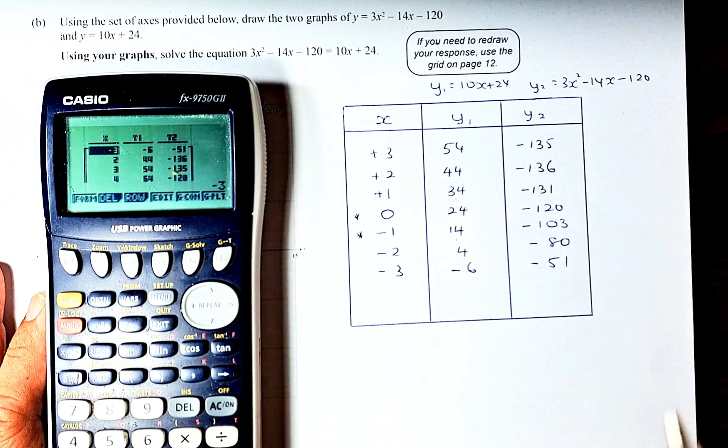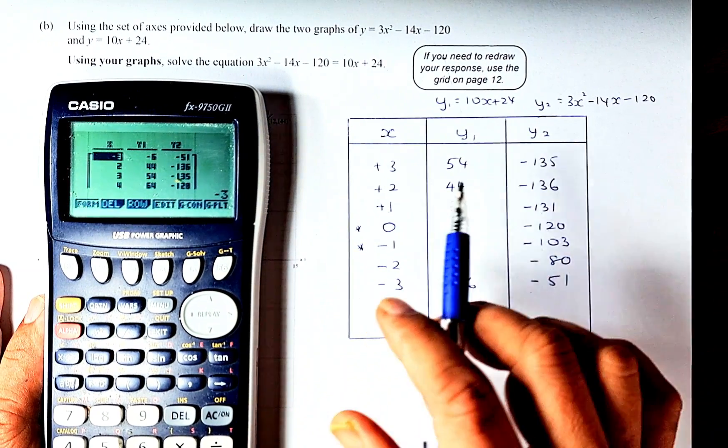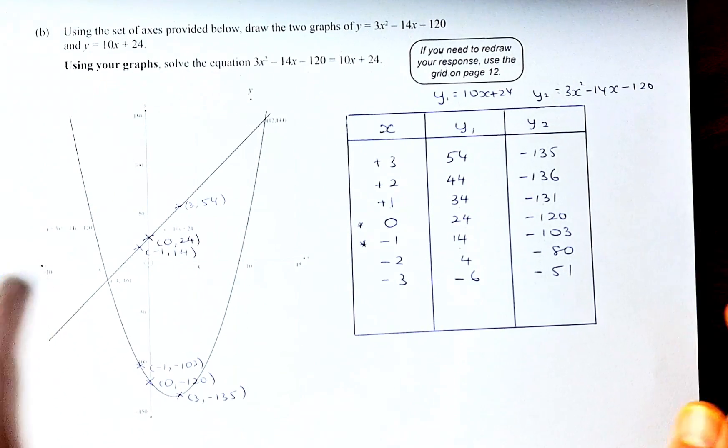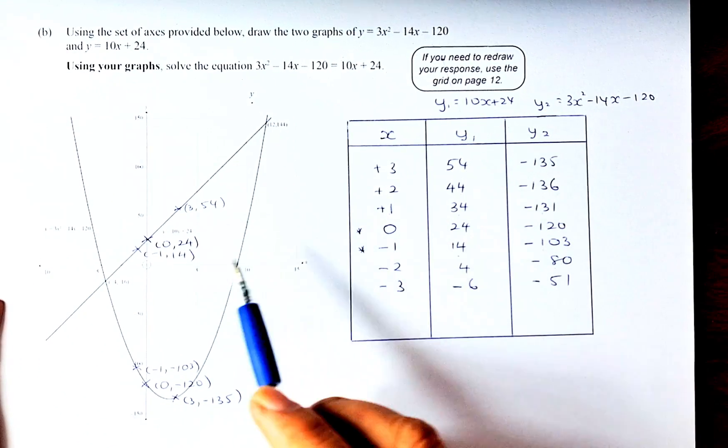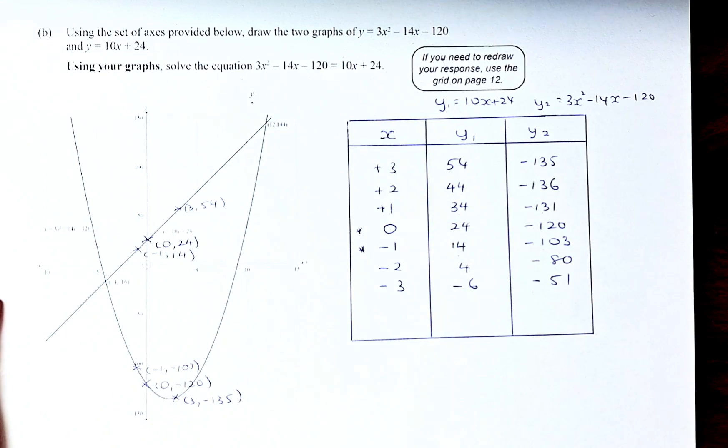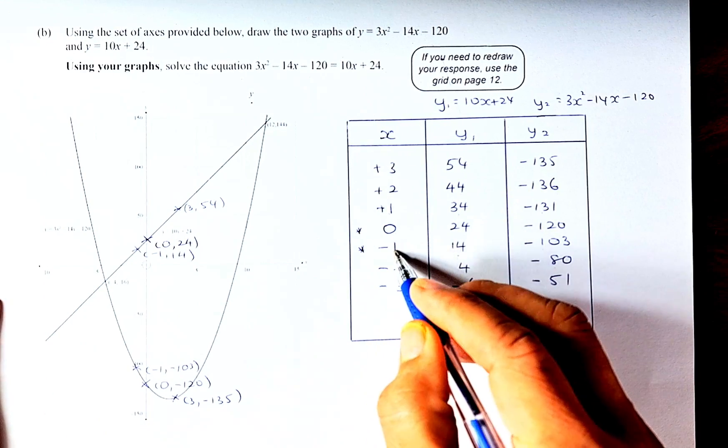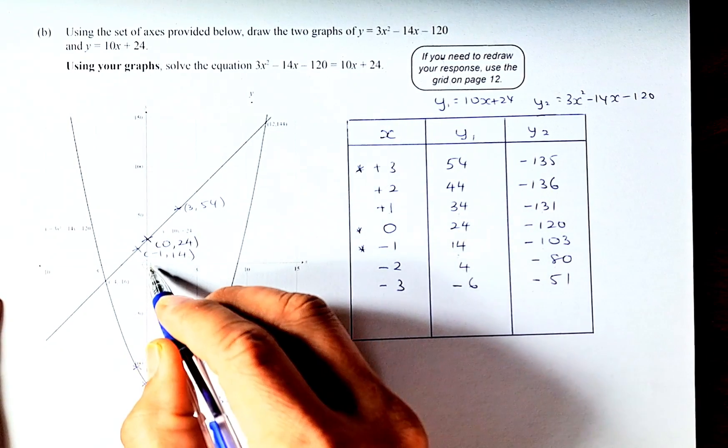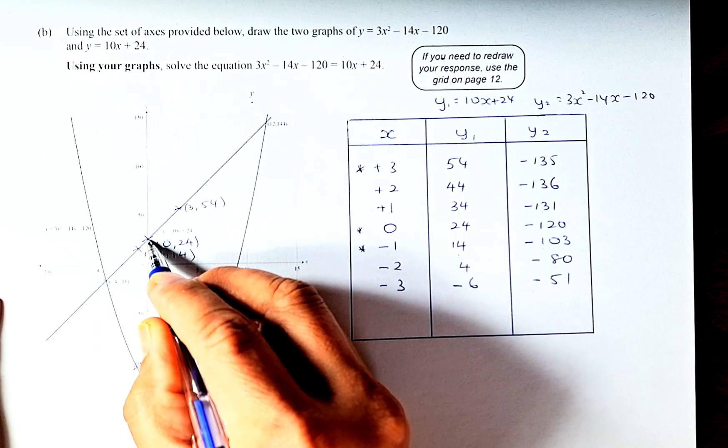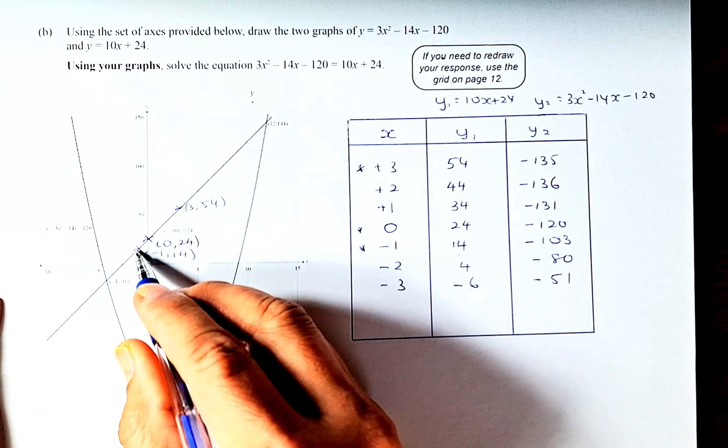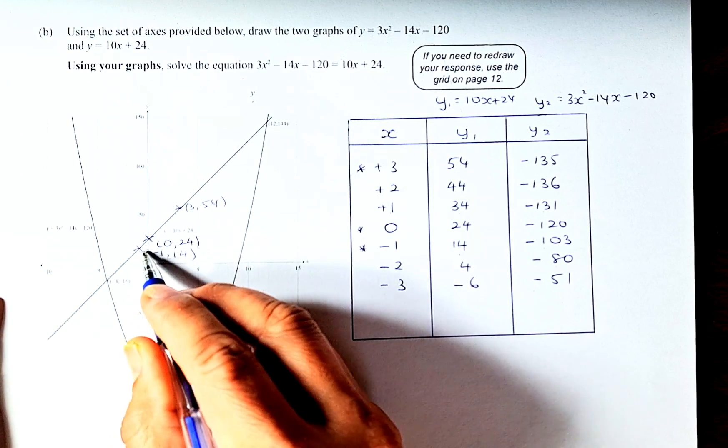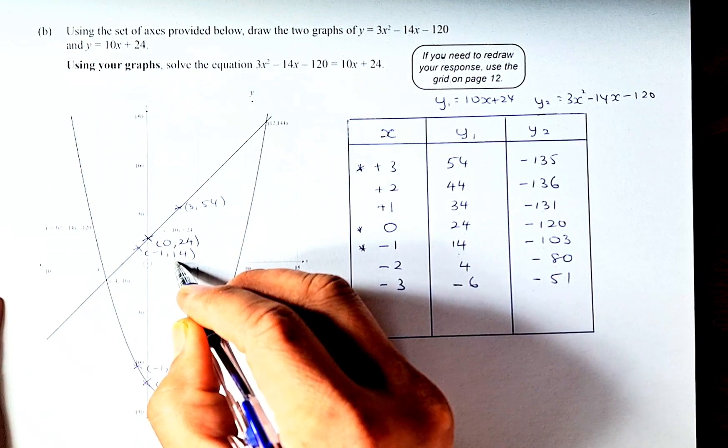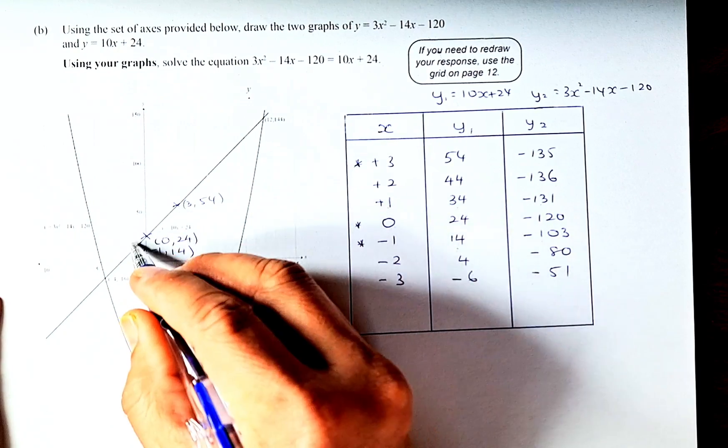For the linear graph, you need 3 points. We've chosen x = 0, -1, and 3. When x = 0, y = 24, giving point (0, 24). When x = -1, y = 14, giving (-1, 14). When x = 3, y = 54, giving (3, 54). Once you have these 3 points, draw the line through them, and that will give you an achieved grade.